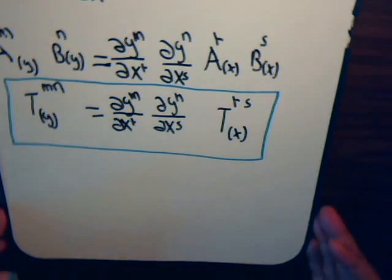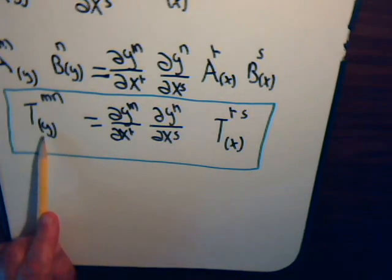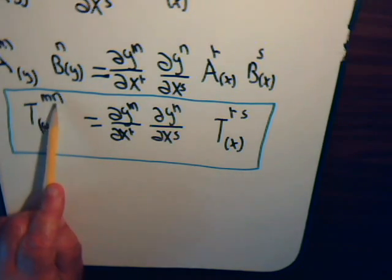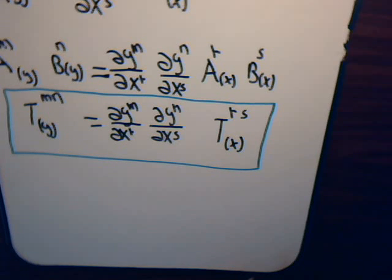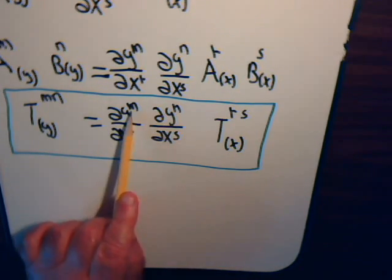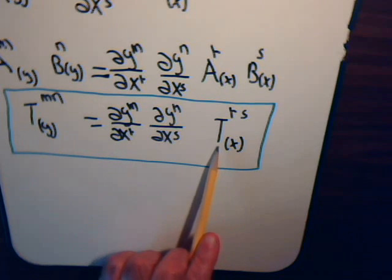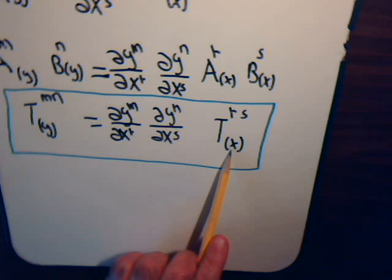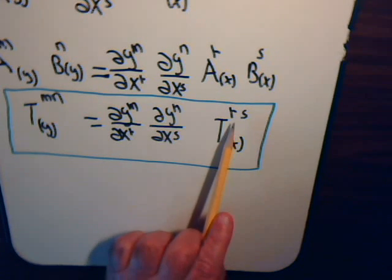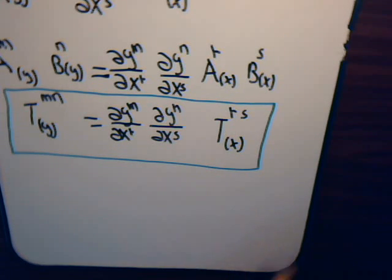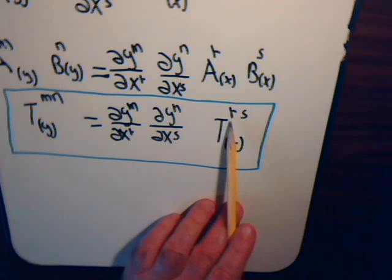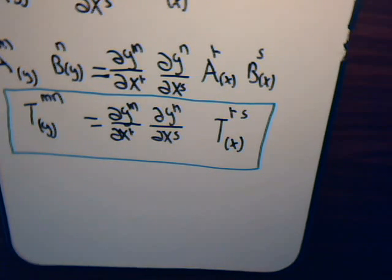You can see there's a pattern here. In the Y coordinate system, we have the upper labels for the components M and N. So for the partial derivatives of Y, it has to be in the numerator where we have the upper labeling of M and N. Now in the X frame, the partial derivatives for X are going to have R and S, but they have to be in the denominator because this tensor has the repeated indexes — upper, lower, upper, lower. As we know from our previous discussions, that's the general pattern for contravariant transformation.